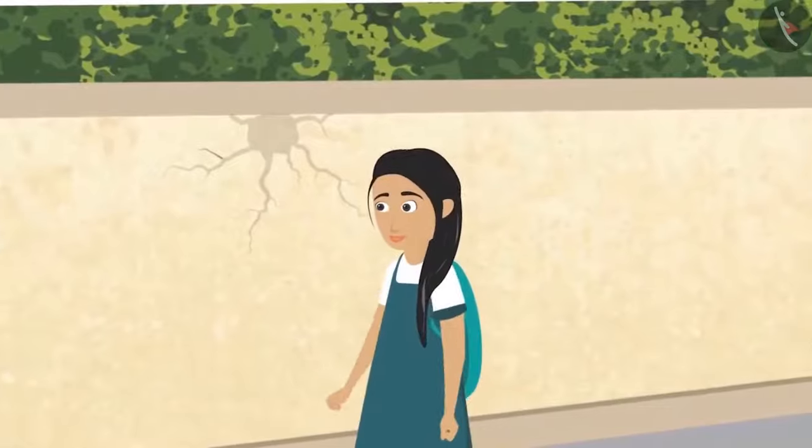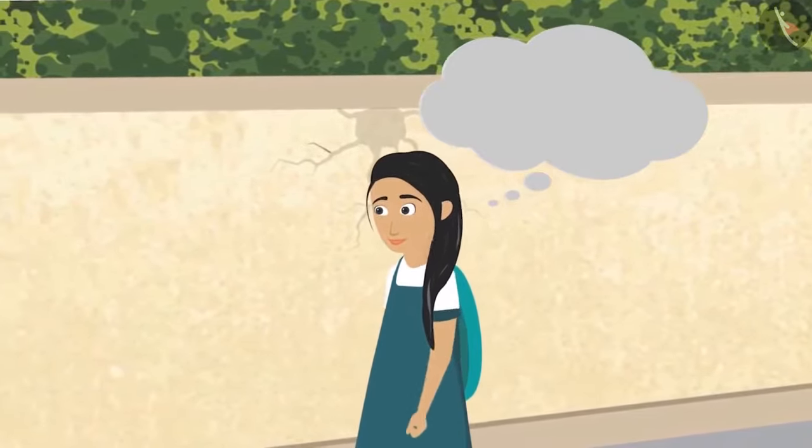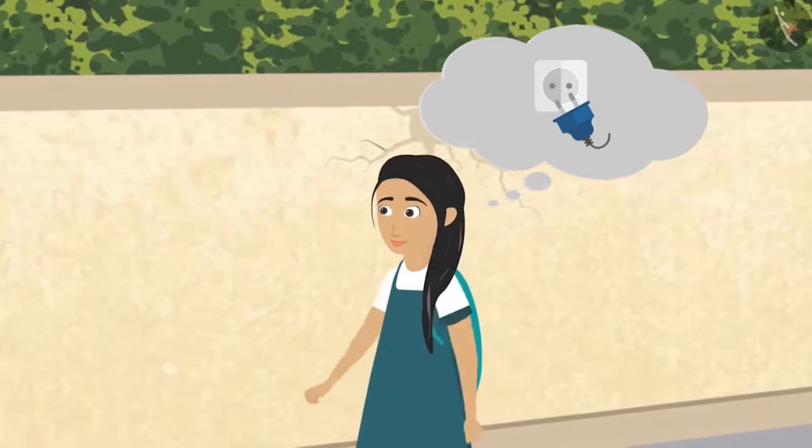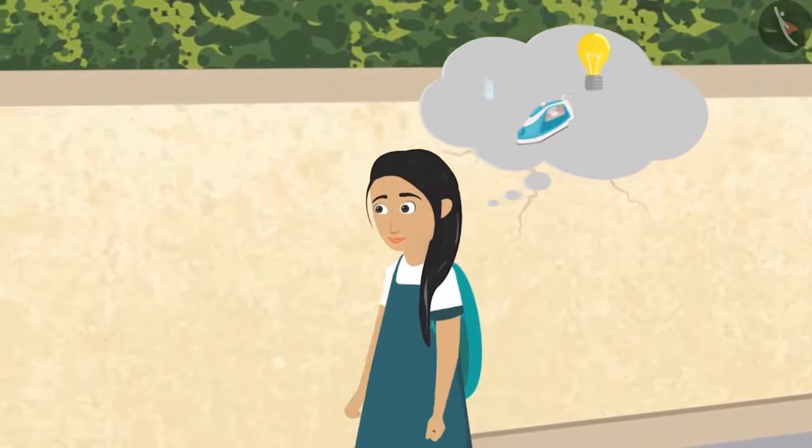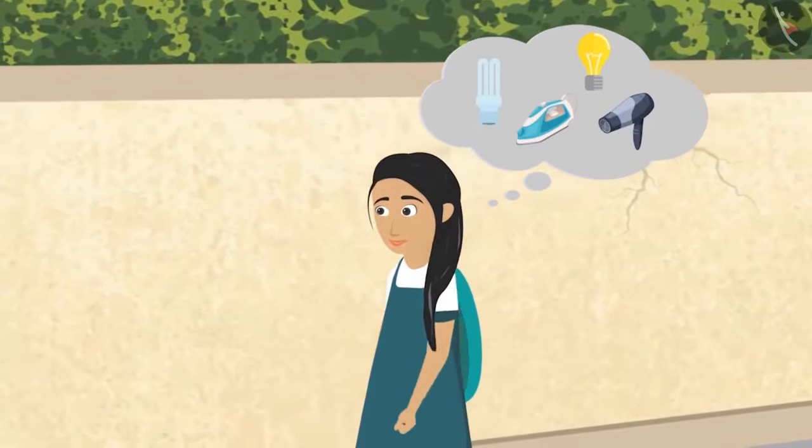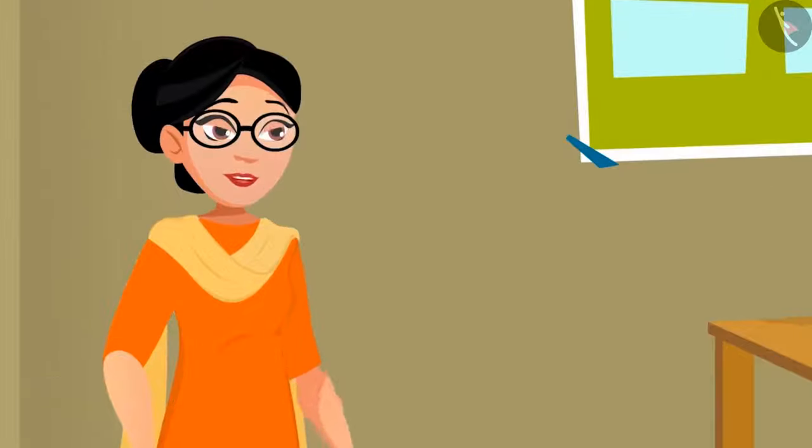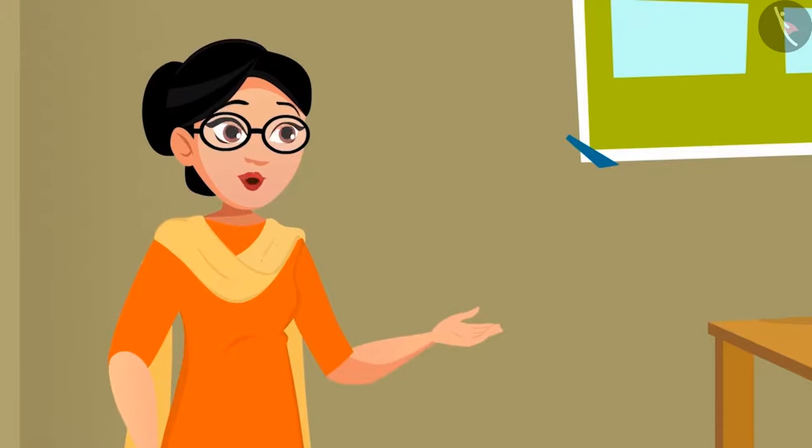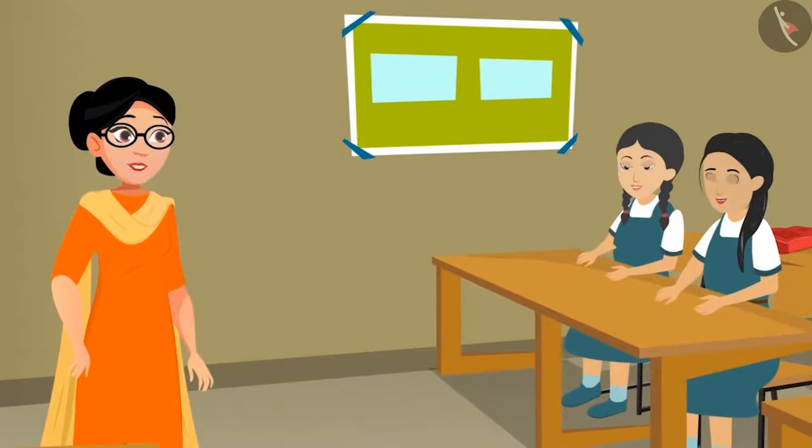The next day while going to school, Sunaina has many questions in her mind. The electric switch has current, but where does this current come from? There are so many things in the house that run on electricity. How do they all work? When Seema Didi comes to class, Sunaina asks all these questions. 'Today we are going to discuss all of these, Sunaina. It's good that you asked this question.'